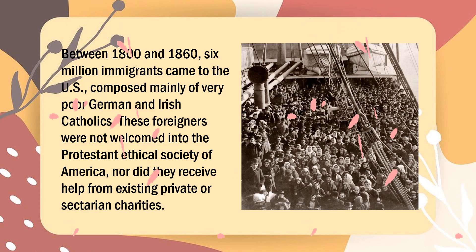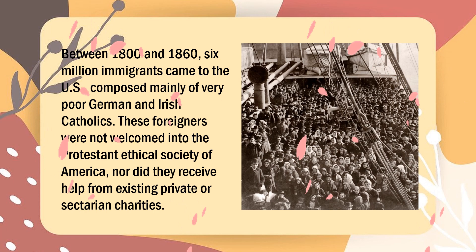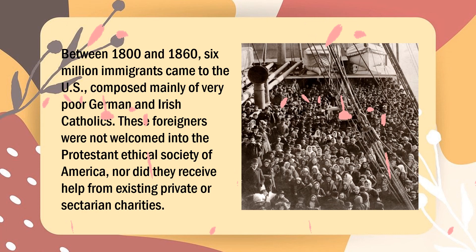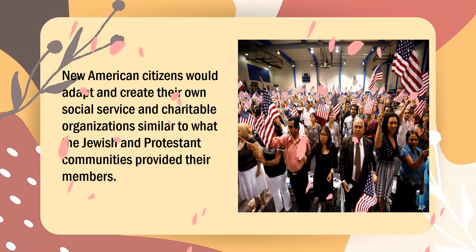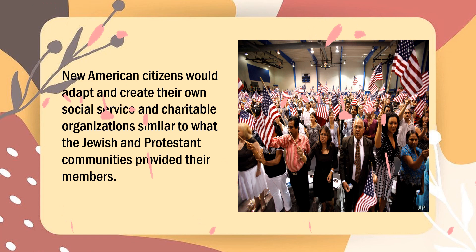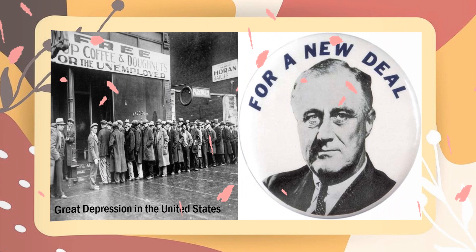For example, between 1800 and 1860, 6 million immigrants came to the U.S., composed mainly of very poor German and Irish Catholics. These foreigners were not welcomed into the Protestant Ethical Society of America, nor did they receive help from existing private or sectarian charities. Eventually, these new American citizens would adapt and create their own social service and charitable organizations similar to what the Jewish and Protestant communities provided their members.